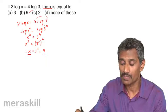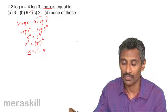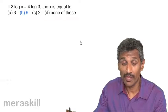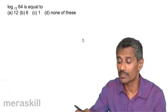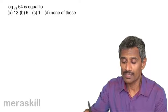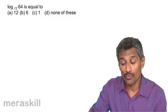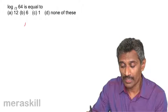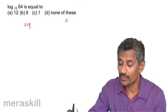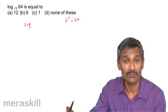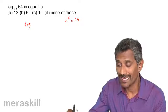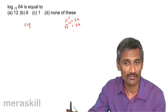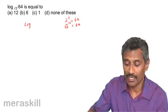Next: log 64 to the base √2. We know that 2⁶ = 64. Since √2 squared is 2, we need to express 64 as a power of √2. If 2⁶ = 64, then (√2)¹² = 64, because root 2 raised to 12 equals 2 raised to 6.